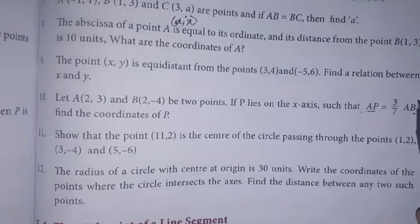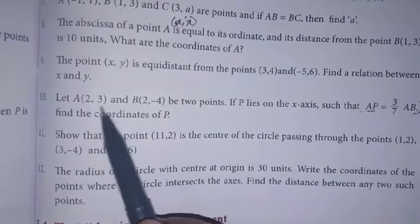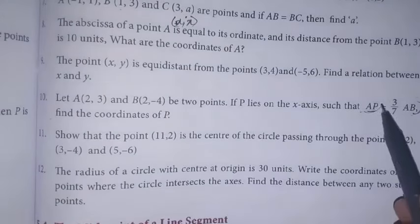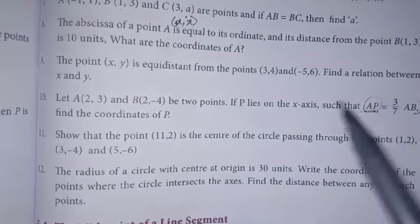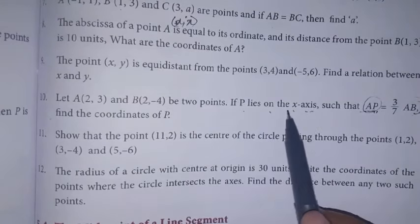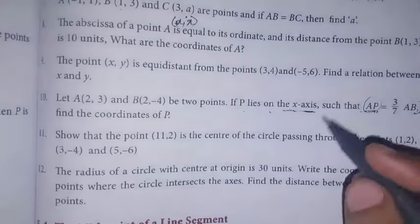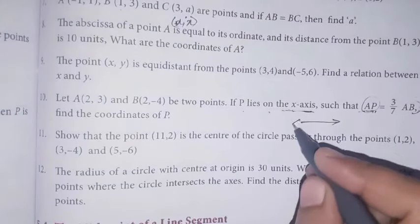Now, the distance between AB involves 2 points, and the distance between AP involves point B. P lies on the x-axis, so the y-coordinate of P is 0.